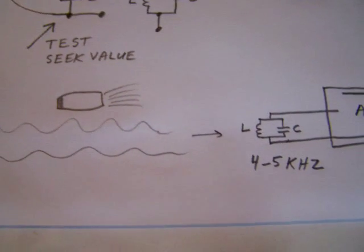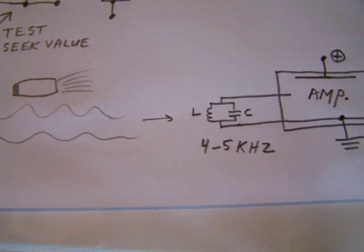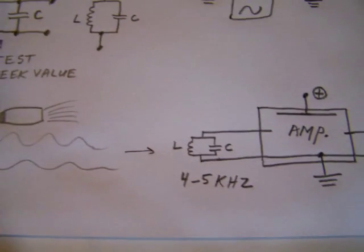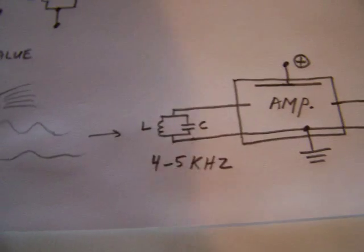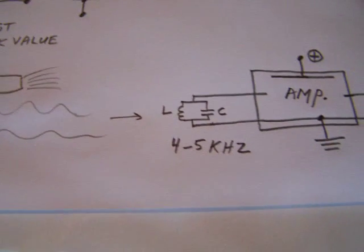The first thing is that you have to develop a coil for the received frequency and it has to be about four to five kilohertz.